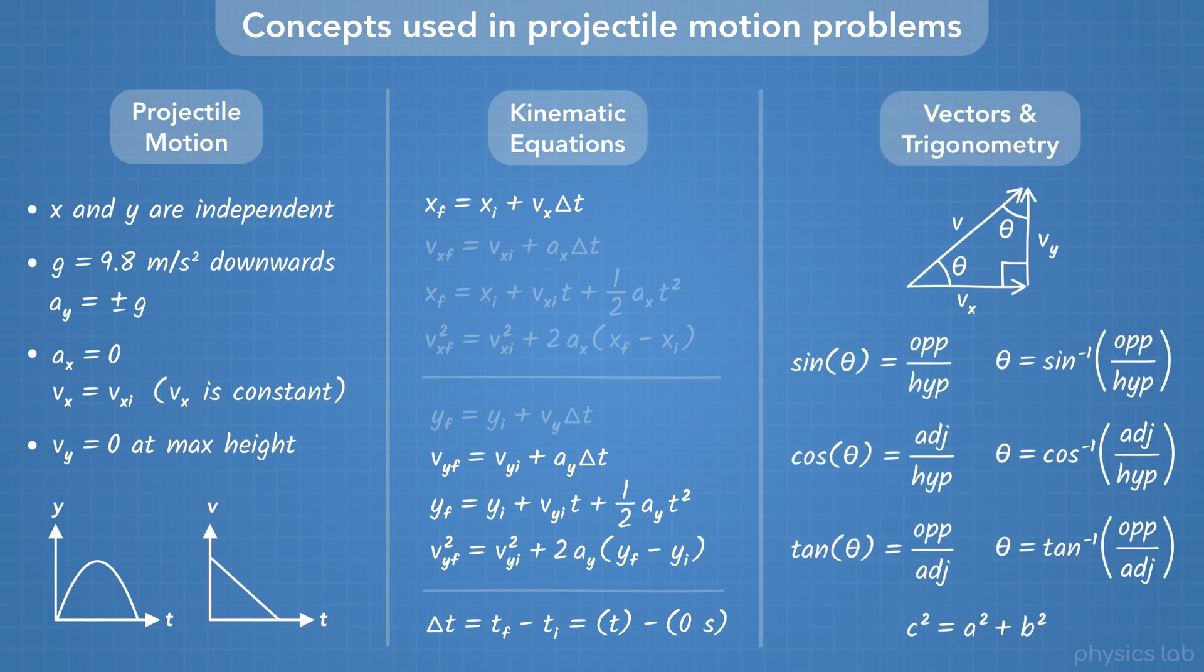And for two-dimensional projectile motion, we need to know how to work with vectors and trigonometry. A vector and its two components form a right triangle, so we can use right triangle trig to find the components, the magnitude, or the angles. It's better to know how to apply the trig relationships instead of memorizing if X or Y goes with sine or cosine, because that depends on the angle that we're using.